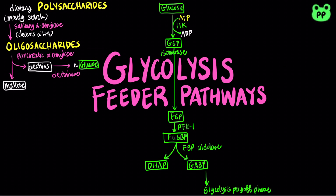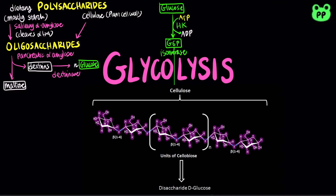Most animals lack the enzyme cellulase to digest the polysaccharide cellulose found in plant cell walls, which cleaves beta-1 to 4 glycosidic linkages.